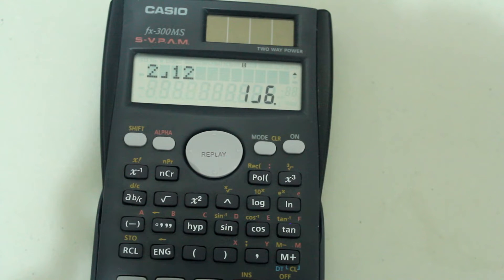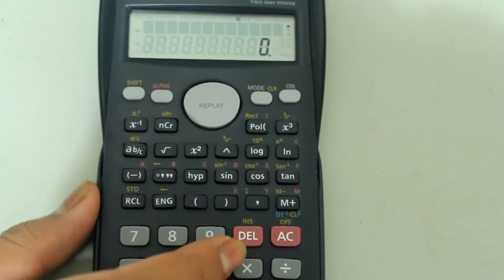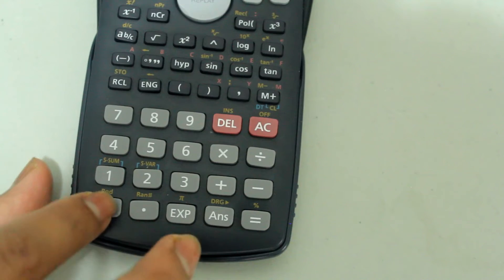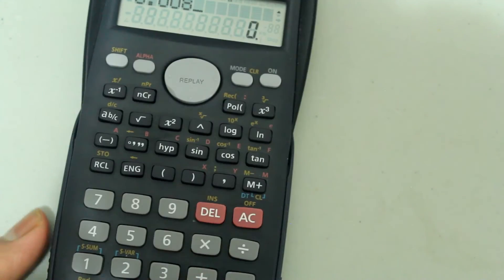Also, if I just type in a decimal that has a nice equivalent fraction, the calculator will convert the decimal to a fraction form. For example, if I type in 0.008, which looks like this, and I press equals,